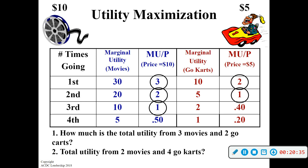How much is the total utility from three movies and two go-karts? That's 75. And the total utility from two movies and four go-karts — you've got 50 from the movies, then 10 plus 5 plus 3 is 18, so 18 plus 50 is 68. So that combination would also spend your $40, but it only gives you 68 total utils compared to 75. So this combination — three movies and two go-karts — is going to make you happier.